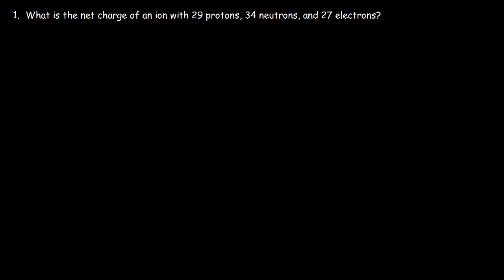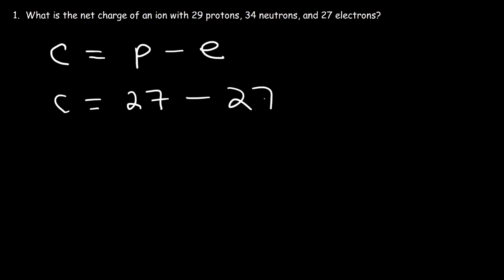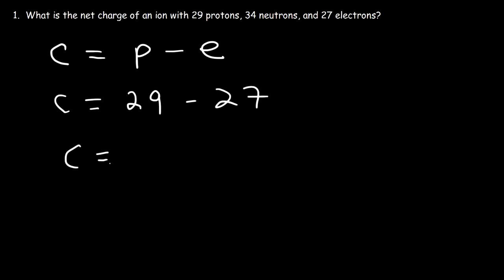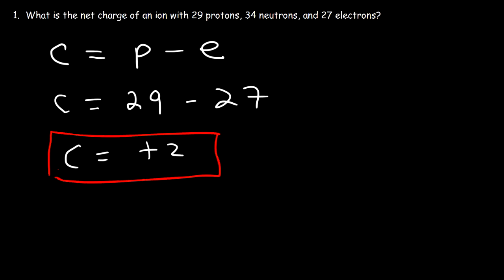Here's another practice problem: what is the net charge of an ion with 29 protons, 34 neutrons, and 27 electrons? To find the net charge, take the difference between the number of protons and electrons: 29 minus 27 is +2. We have a positively charged cation since there are more protons than electrons.